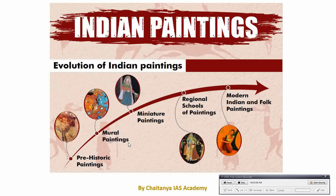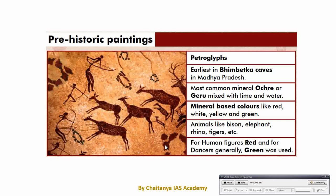Let's start with prehistorical painting. Prehistorical painting is the earliest painting, normally found in Madhya Pradesh. Bhimkhet Caves, around 10,000 BC, has the oldest painting. In this painting, common minerals or gedu has been mixed with lime and water as a pigment to paint. Normally red, white, yellow and green color has been used. Red color was used to denote man and green color was used to denote dancing girls. The main themes of this painting are animals such as tiger, elephant, and rhino.